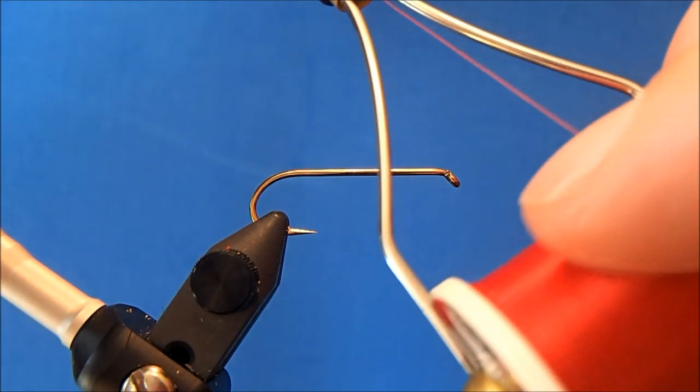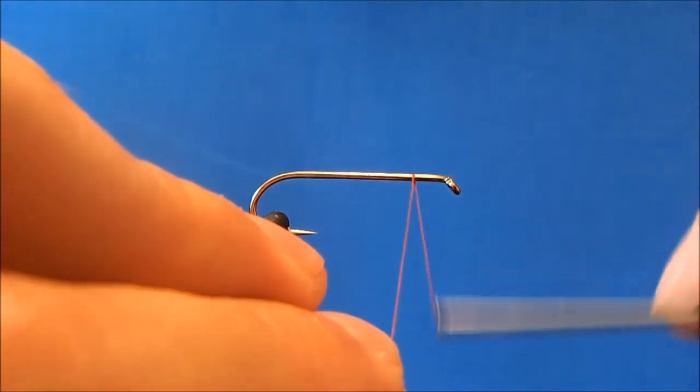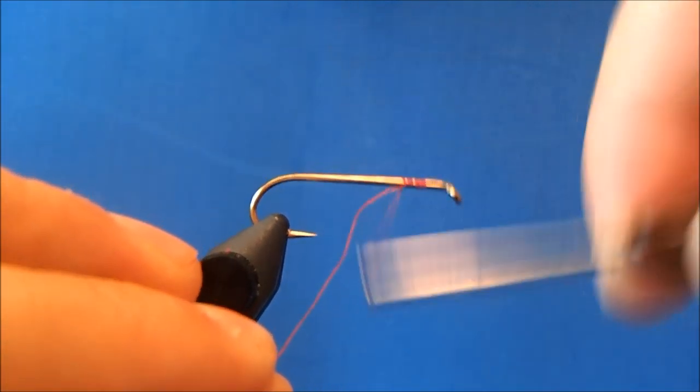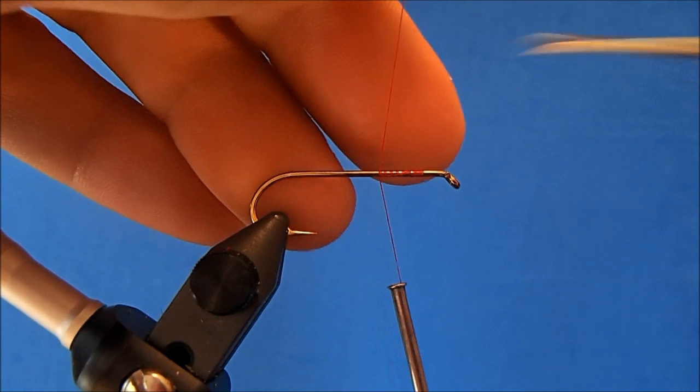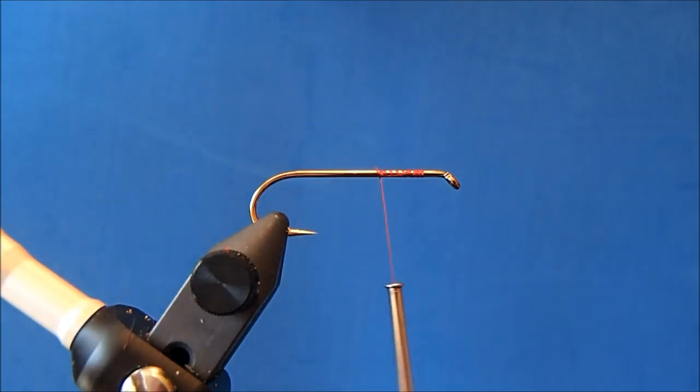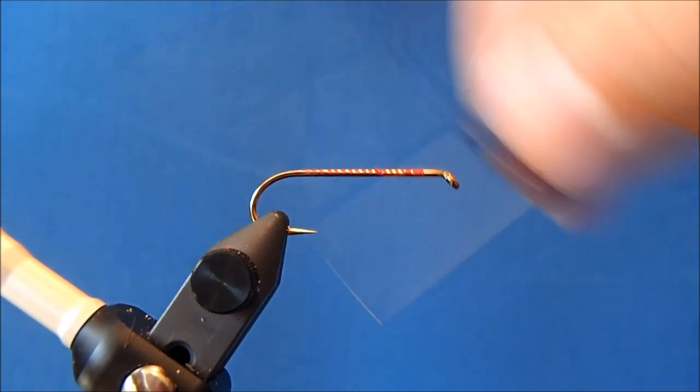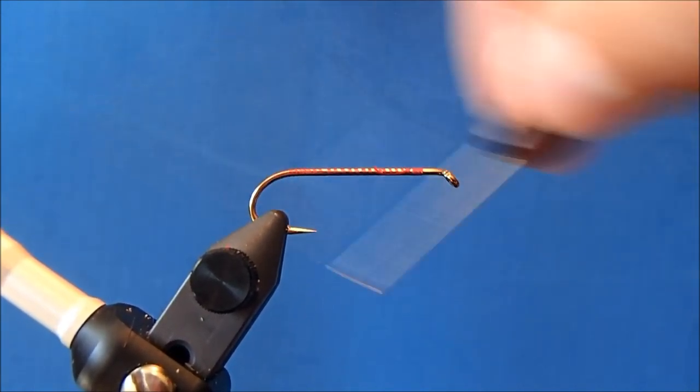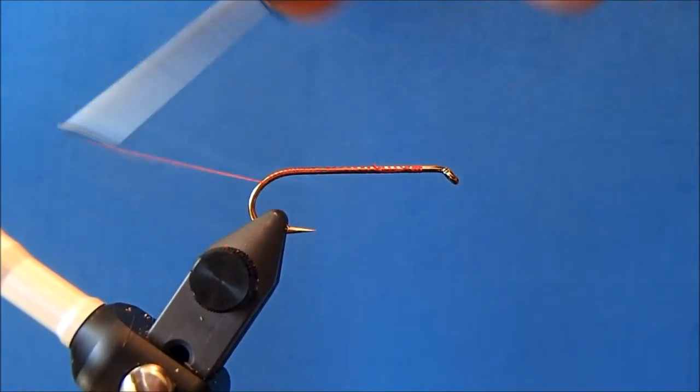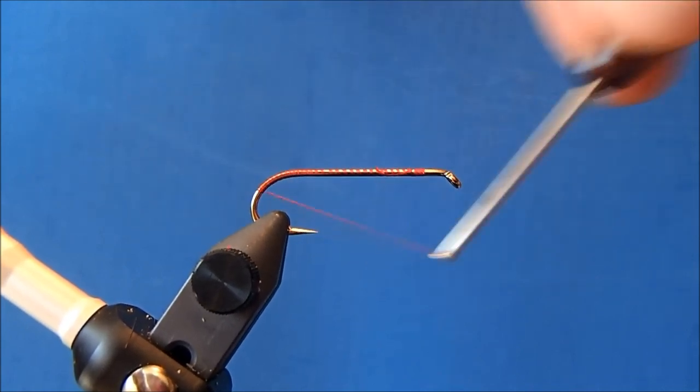The first of which is going to be a 70 red and this is going to act as a tag at the bottom of this pattern or at the bend in the hook and also just to tie in my preliminary materials or my body materials and then I'll switch over to a six aught black to finish off the head.